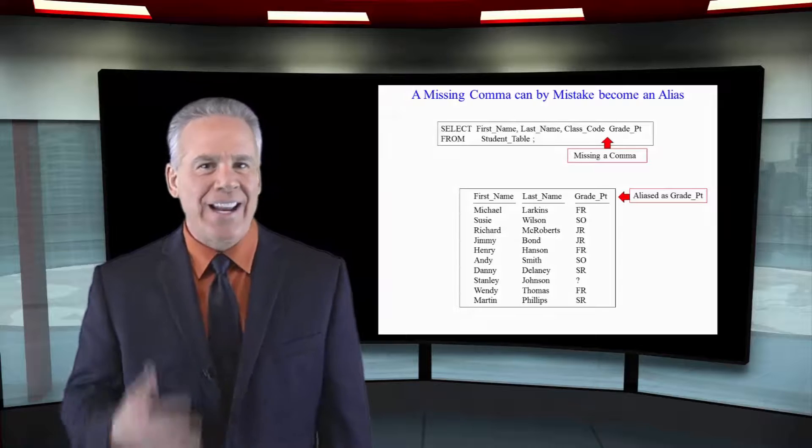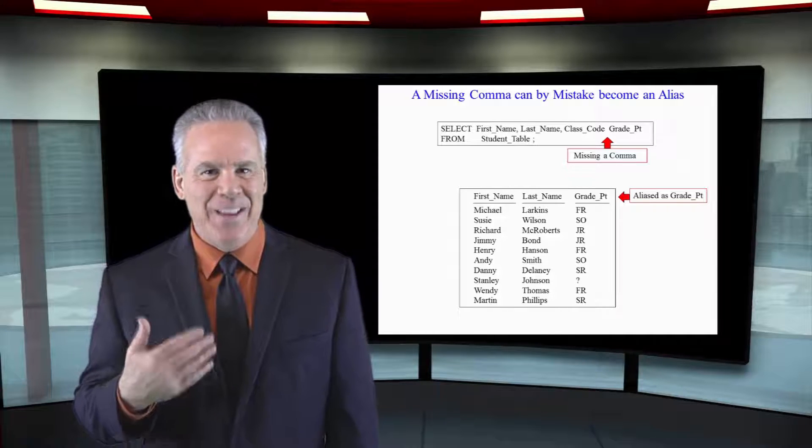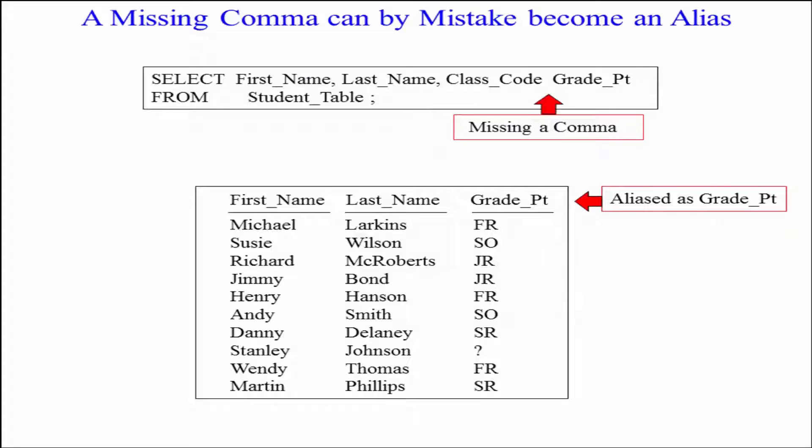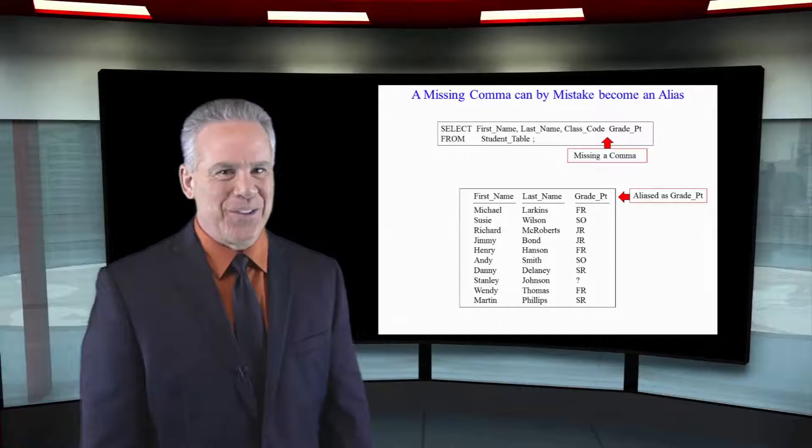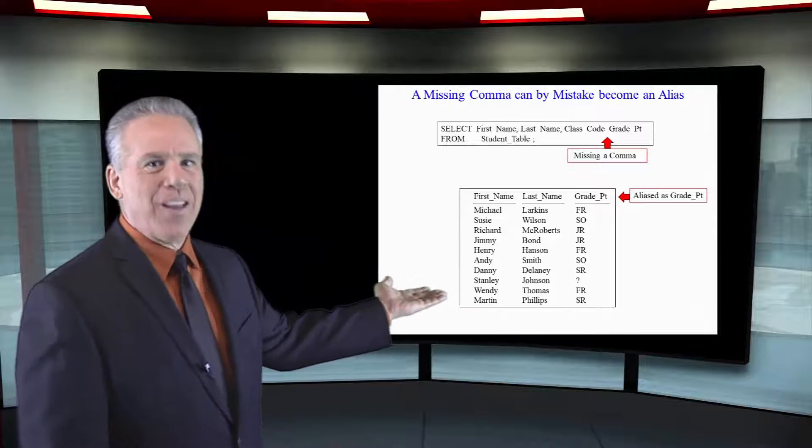Here's why I like to put the word AS in. As you can see, we've made a mistake on this report. We've got first name, we've got last name, we've got class code, but then we forgot the comma. So it thinks the alias is grade point, and you can see that comes out on the report. We've made a mistake.